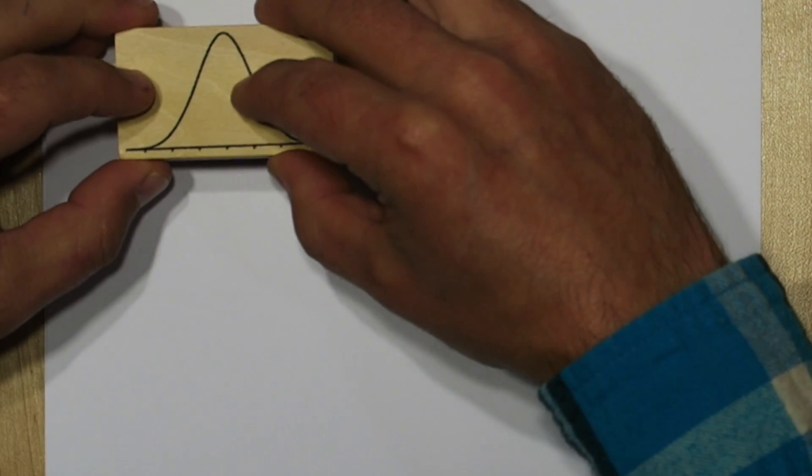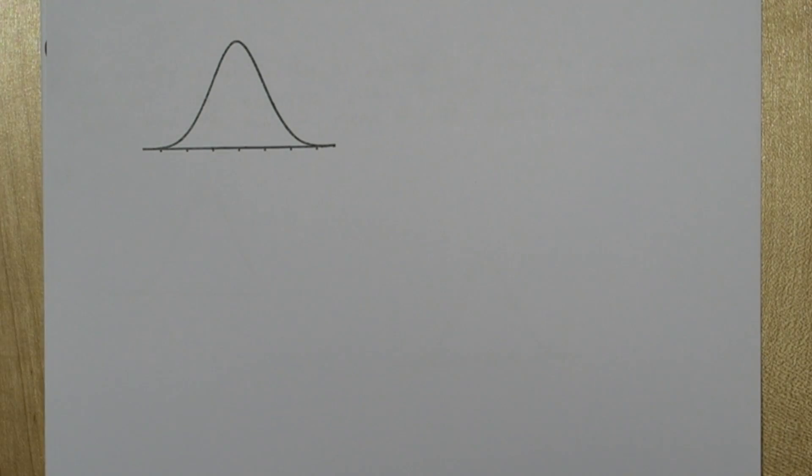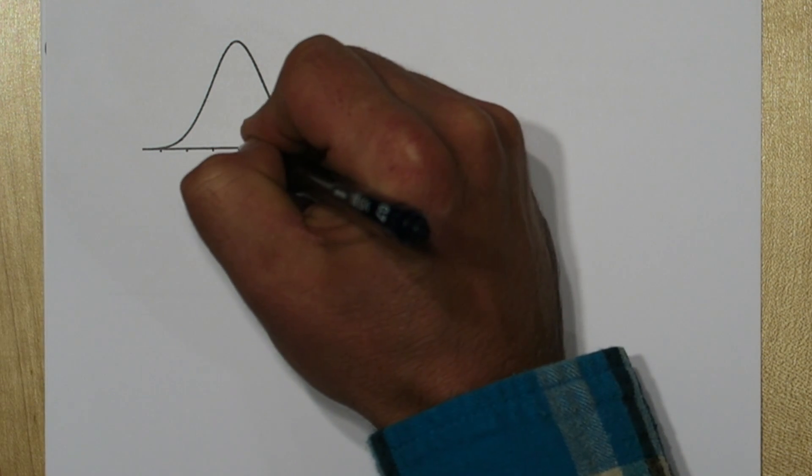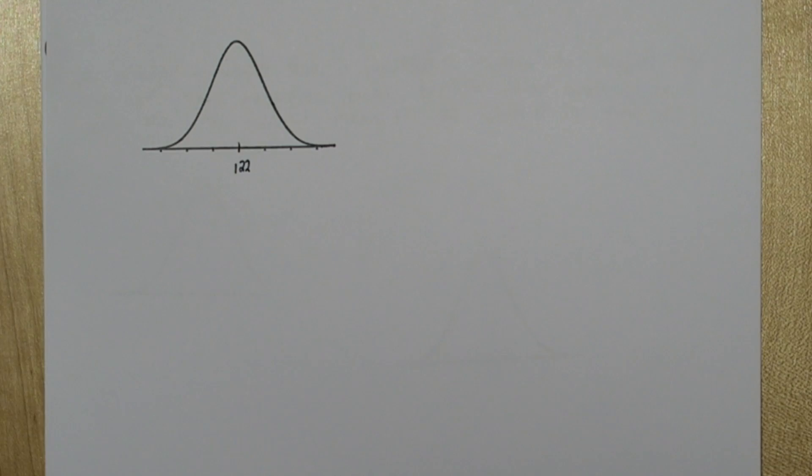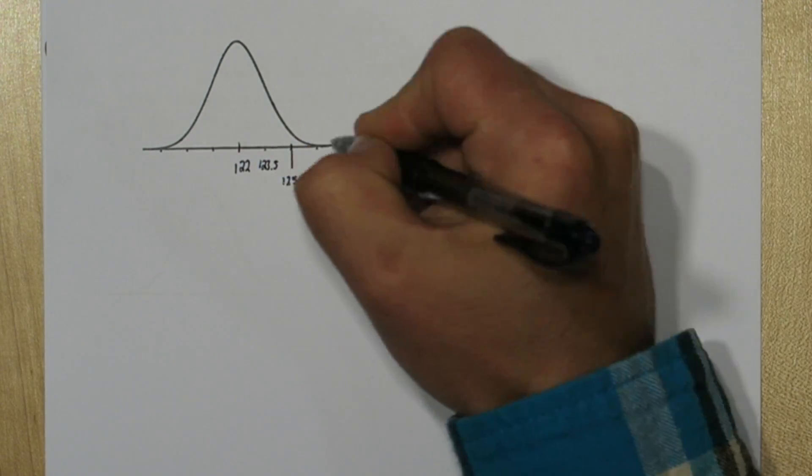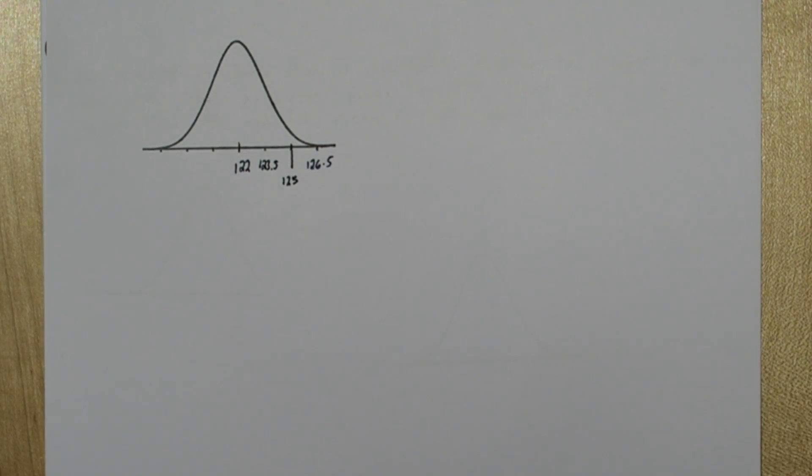For part B, let's start by stamping a normal distribution. You can get these stamps on Amazon, I'll put a link in the description. We can use a normal distribution because they say the sampling distribution is approximately normal and they tell us the mean is 122 and the standard deviation of the sampling distribution is 1.5.